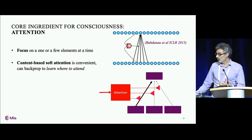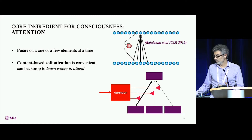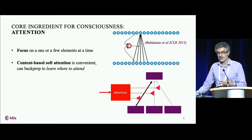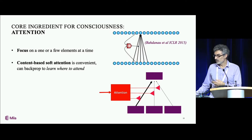The way it works is the computation being done at the next level is going to use as input a selection from the previous level of computation. That selection is going to be a soft selection. We can take a convex weighted combination of value vectors from the previous level, and these convex weights come through a softmax that is conditioned on each of the elements. For each of the elements, we're going to see how well they match the context to see on which one the attention should be focused.